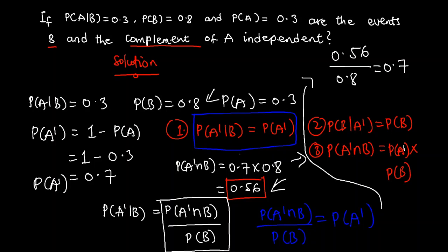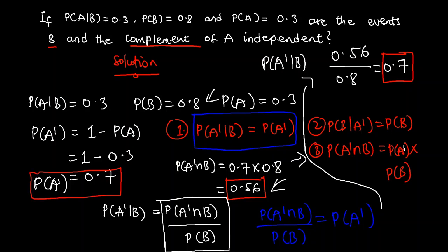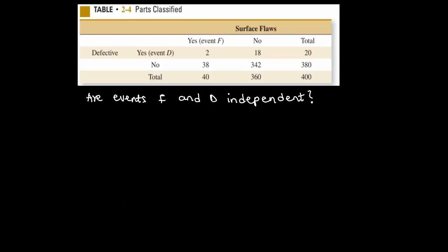Dividing 0.56 by 0.8 gives 0.7. Therefore P(A'|B) = 0.7, which is the same as P(A'). Since the probability of A' given B equals the probability of A', events A' and B are independent. So the answer is that event B and the complement of A are independent.